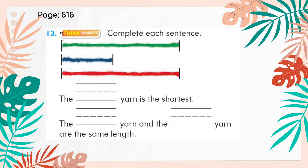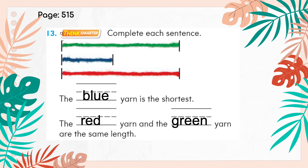On page 515, question 13 says complete each sentence. We have three lines: green, blue, and red. The blank yarn is the shortest — out of green, blue, and red, the blue yarn is the shortest, so we write blue. The next sentence says the blank yarn and the blank yarn are the same length. Looking at the red and green yarn, they are exactly the same length, so we write: the red yarn and the green yarn are the same length.